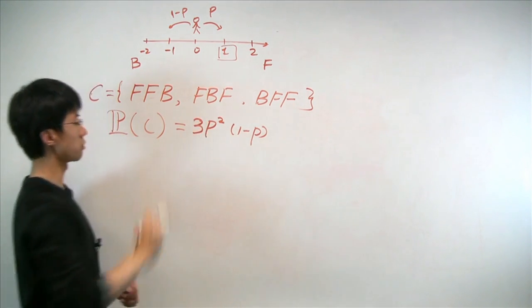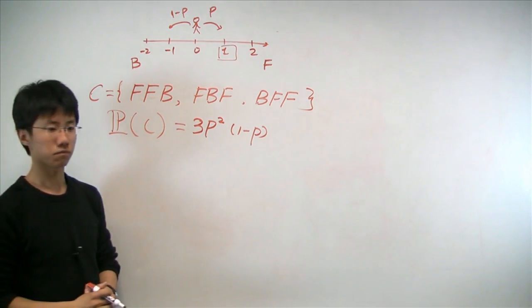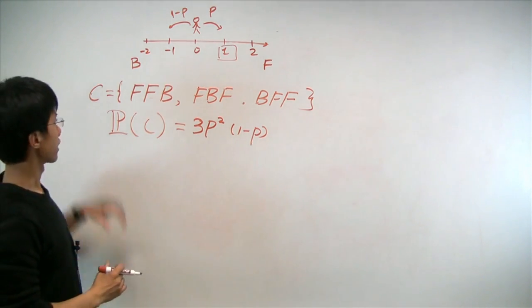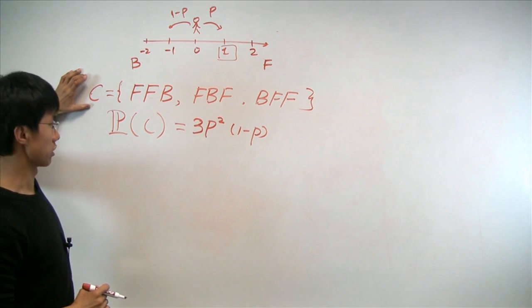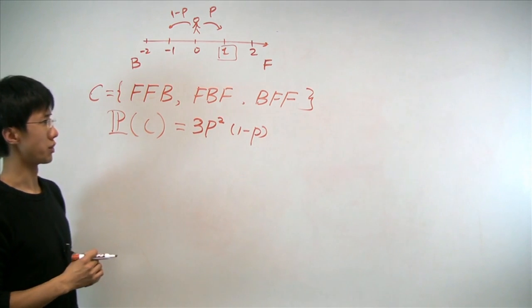And since there are three of them, we multiply three in front, and that will give us the probability. In the last part of the problem, we're asked to compute that conditional on event C already took place. What is the probability that the first step he took was a forward step?